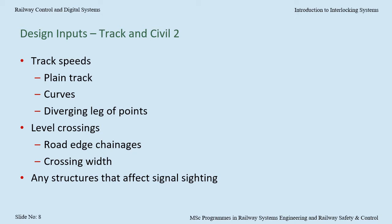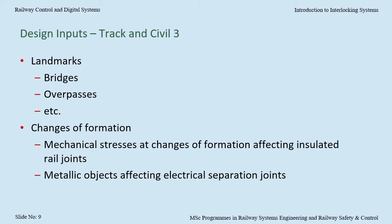For level crossings, we need to know about the road edge changes and the crossing width — that is, the distance from when the road user enters the crossing, be that the boom barrier or the gate, through to when they are in a safe place on the other side. Any structures, landmarks including bridges and overpasses, and any changes of formation. I may choose to use track circuits with insulated rail joints, and there are going to be mechanical stresses where you have a change of formation, say from a ballast bed to a slab track bed. You may not want me to put insulated rail joints near that change of formation.